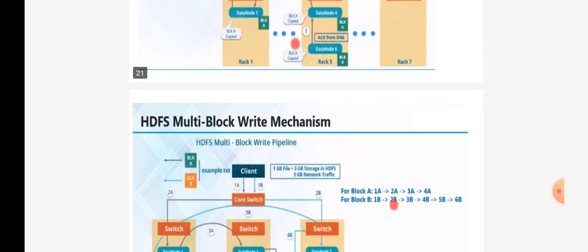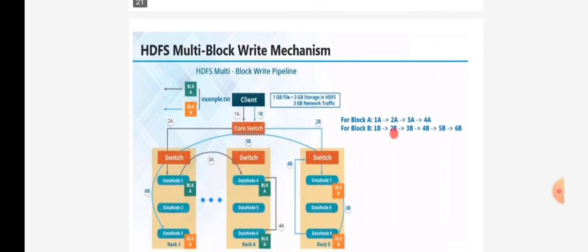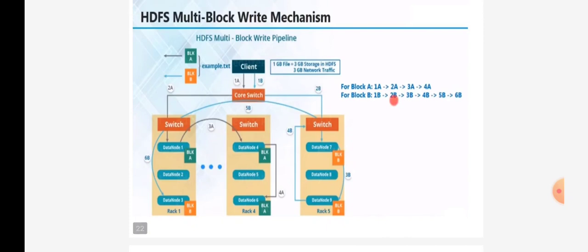Now talking about the multi-block write mechanism. When we have much more data, it would take a long time if we stored block A first, then waited to move to block B, then block C. Instead, it will happen parallelly. All blocks will be executed in parallel for storage, which reduces time consumption. For example, if we have a file example.txt comprising two blocks — block A and block B — the client will execute both simultaneously.